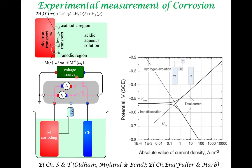Once you have an external voltage source, you can vary above and below the corrosion potential and obtain the entire plot of total current across the entire potential region. Here we are only presenting the anodic part of the corrosion reaction — the potential variation and data presentation is shown above the equilibrium potential of iron, where iron corrodes, giving rise to cations of iron and electrons.